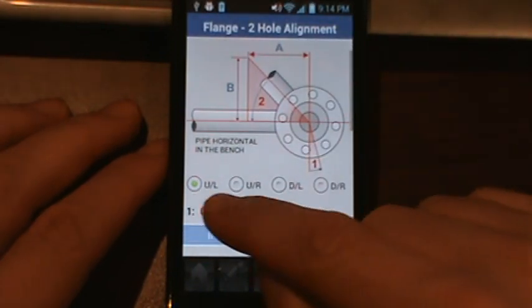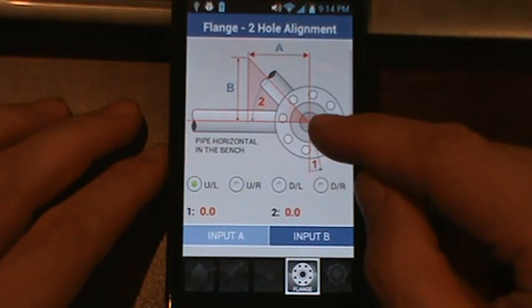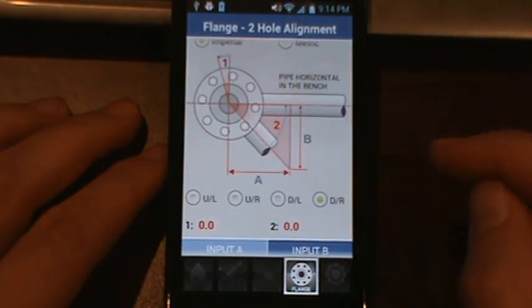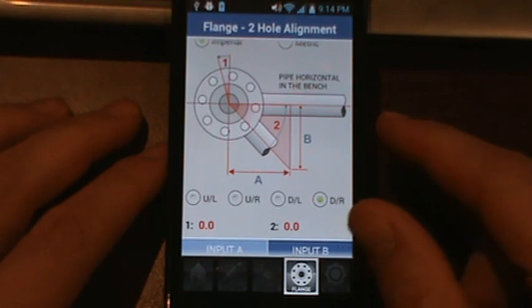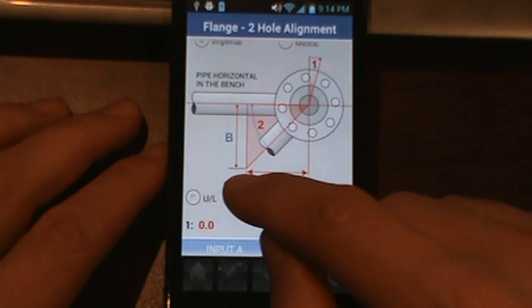As you scroll down you'll see four radial buttons. You've got up left, up right, down left and down right. And if you press the buttons you'll see the image toggles with four different options to match what you would see in the field.